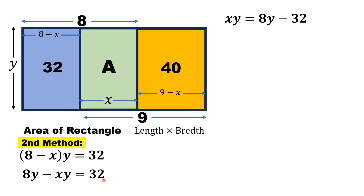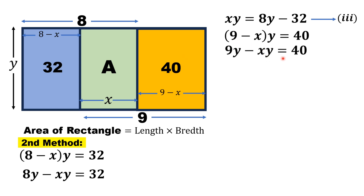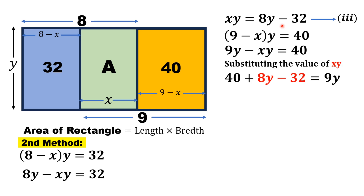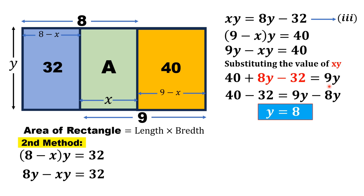Separating xy, we get xy = 8y − 32. This is equation number 3. From the yellow rectangle, the area is (9 − x)·y = 40, giving 9y − xy = 40. Substituting the value of xy from equation 3: 9y − (8y − 32) = 40, which simplifies to 40 + 8y − 32 = 9y, and solving gives y = 8 units.